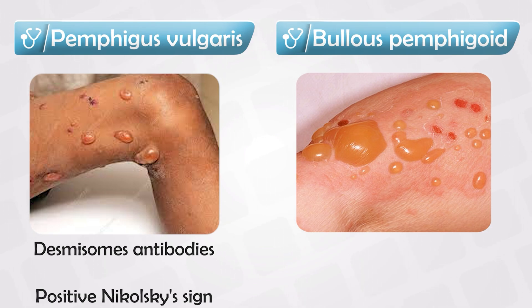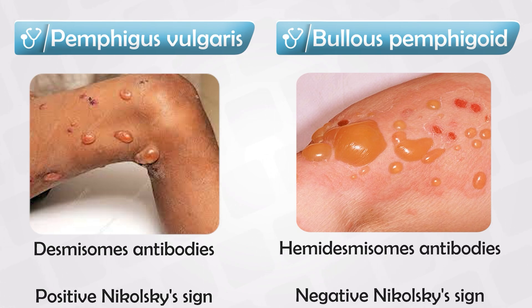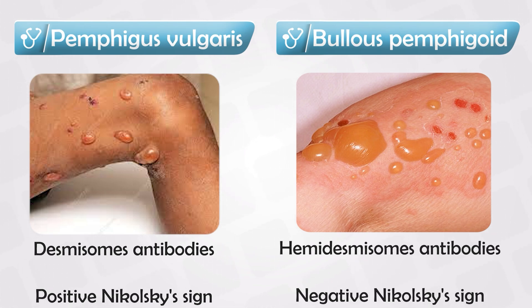On the other hand, Bullous pemphigoid involves auto-antibodies against the hemi-desmosomes, which are basically half-desmosomes. These connect the cells to the basement membrane, which, as you may remember from the skin layers video, separates the epidermis from the dermis. The skin becomes very loose and a gap between the dermis and epidermis allows fluid to accumulate, translating as tense blisters.